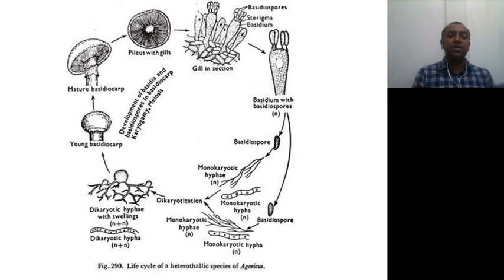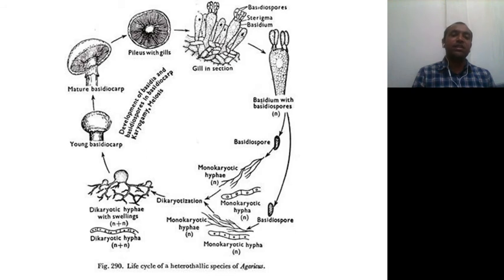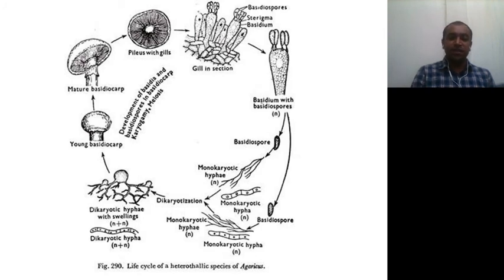The spores are usually monokaryotic and develop monokaryotic hyphae. These two monokaryotic hyphae undergo dikaryotization — fusion takes place and the nucleus of one migrates to the other. As a result you get the dikaryotic stage. The dikaryotic hyphae show swellings, and these swellings develop into a young basidiocarp, which later matures into a mature basidiocarp and the cycle keeps on continuing.